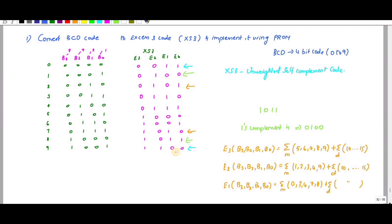E3 is equal to summation M of minterms 5, 6, 7, 8, 9 — these are the input combinations where the output is 1. For the remaining values 10 to 15, it is don't care, written as summation D.